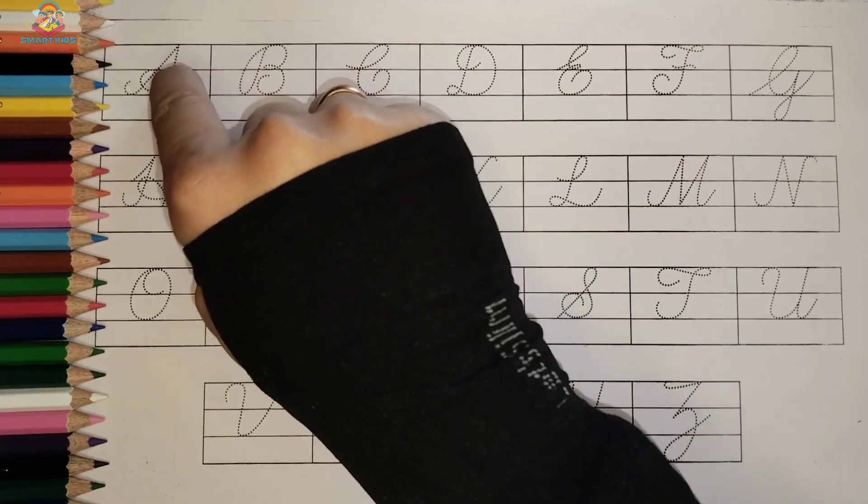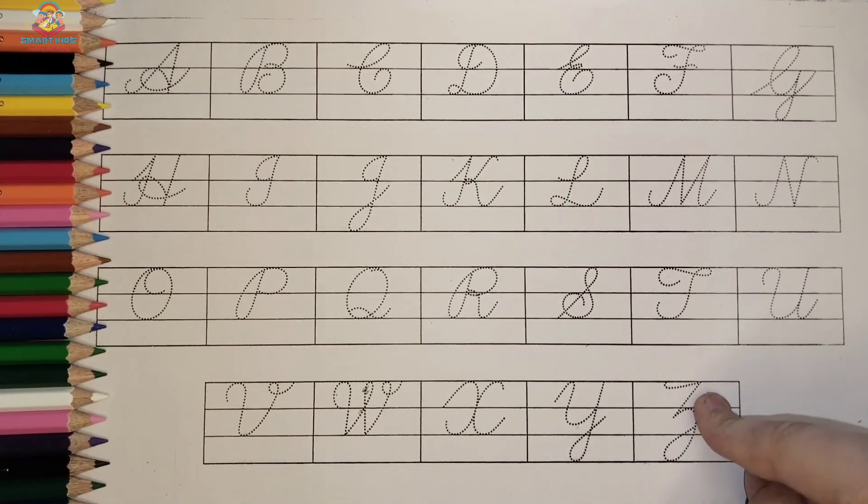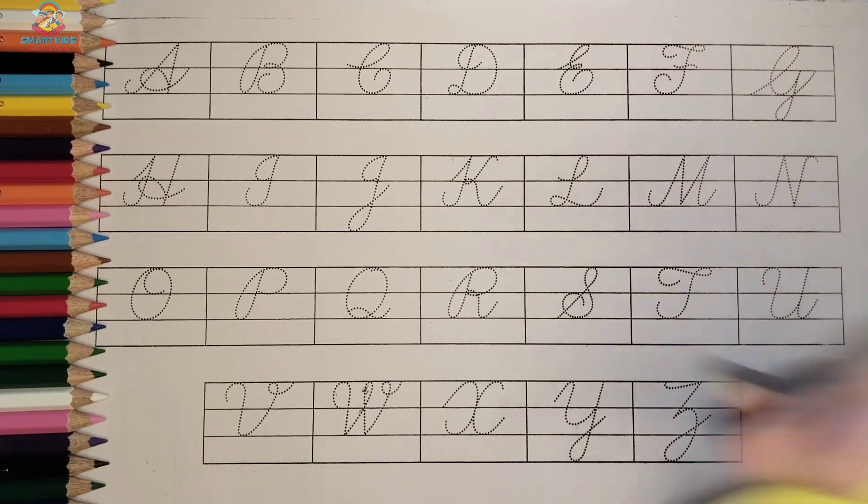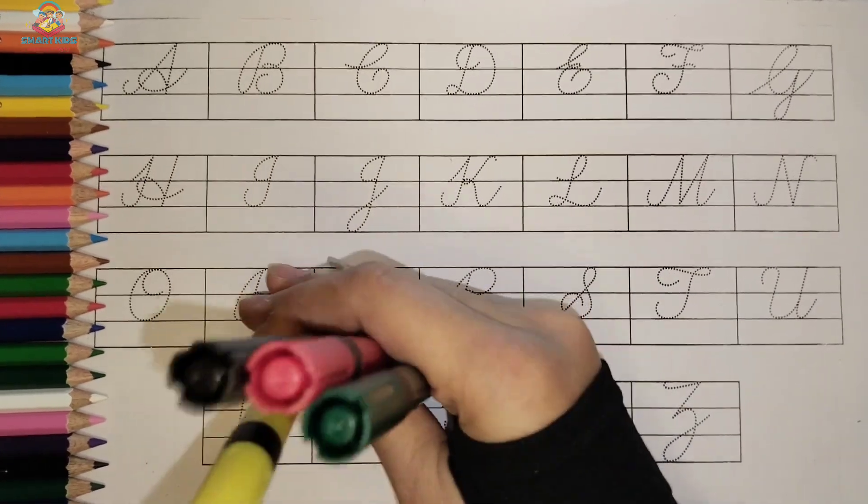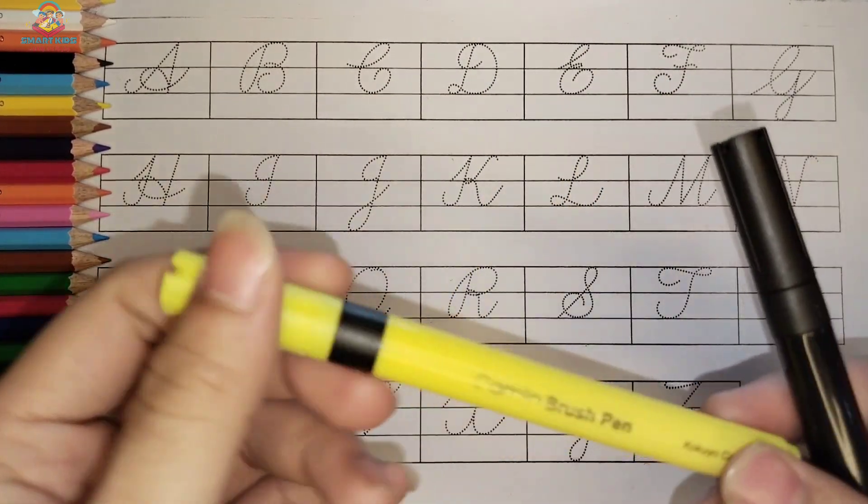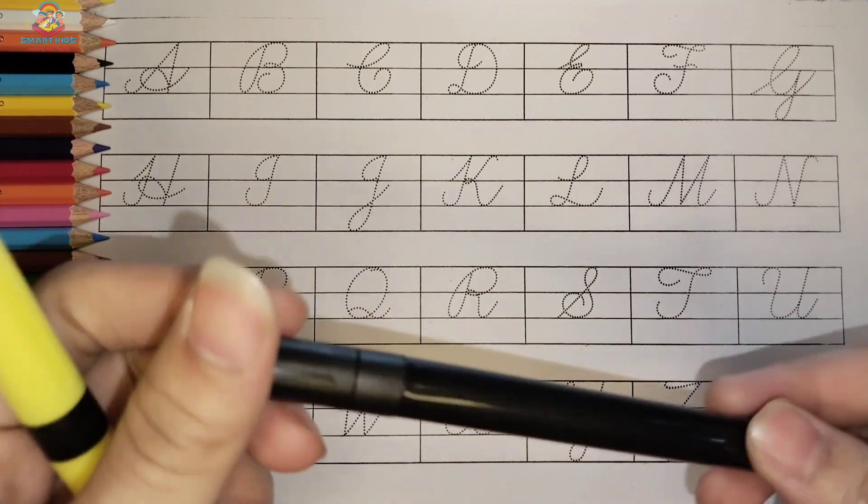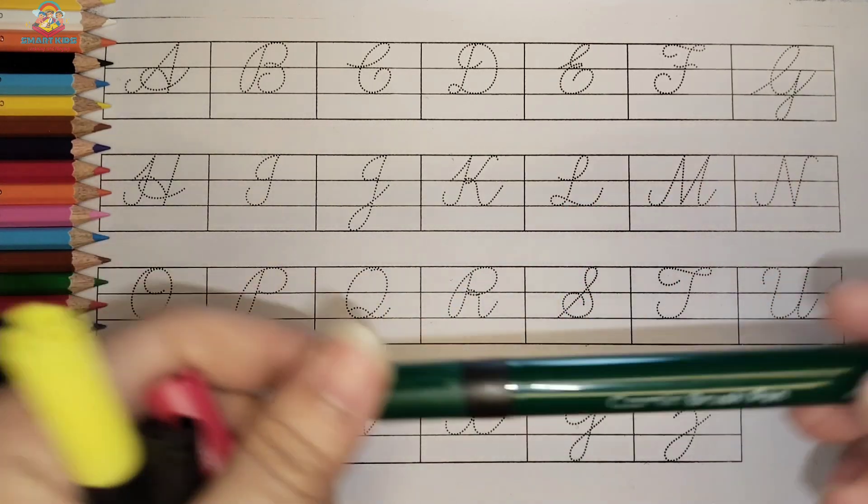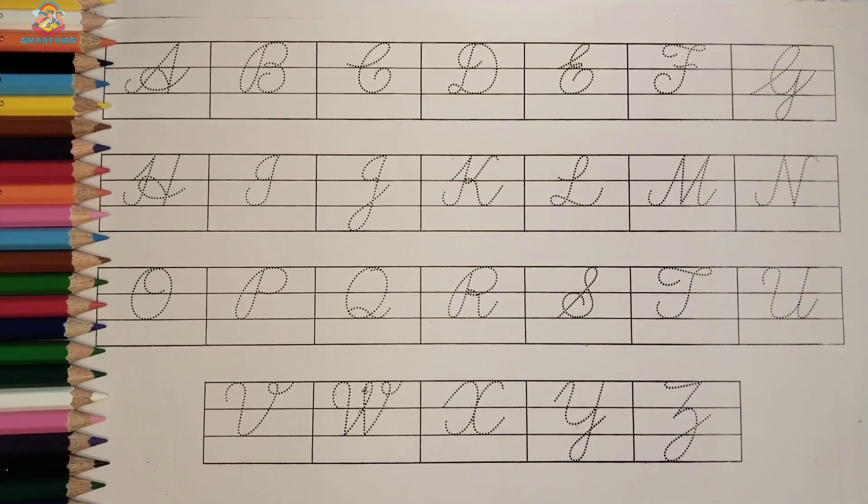Today we will learn Cursive A, B, C, D, A to Z, Cursive A, B, C, D. So, let's select the colors. So, let's start our alphabets.